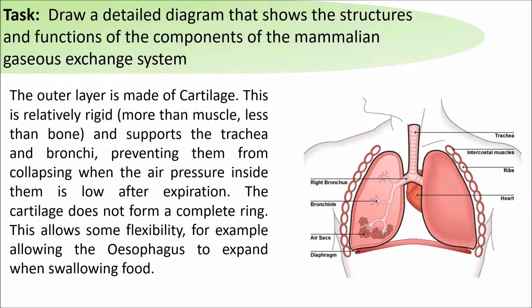The outer layer is made of cartilage. This is a relatively rigid structure and supports the trachea and bronchi, preventing them from collapsing when the air pressure inside them is low after expiration. The cartilage does not form a complete ring, which allows some flexibility — for example, allowing it to expand and move in case you swallow something, allowing it to be coughed back out.